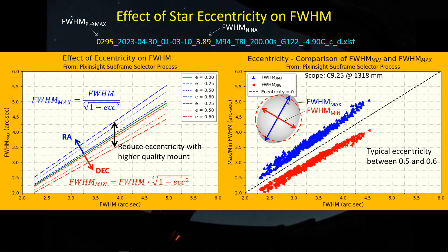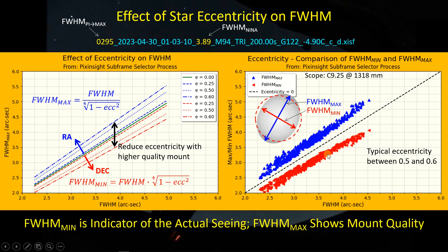There's one thing about this that has always raised a question in my mind: why is the PixInsight-calculated maximum FWHM number lower than the full width at half maximum I'm getting out of NINA? If these two programs are computing full width at half maximum in an identical way, the PixInsight maximum FWHM should be higher than the NINA number. That comparison has always made me wonder what's going on, and that's one of the reasons I'm making this video. The minimum full width at half maximum is probably your best indicator of what the actual seeing is and what you're achieving with your image. The maximum FWHM — or more accurately the difference between the maximum and the minimum — is really a measure of the quality of your mount.